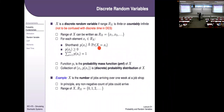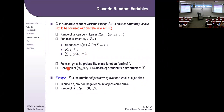For discrete random variables, we can write the range as a set and use the shorthand where little p of x is the probability that the random variable equals that outcome x. The properties carry over: p(x) ≥ 0 and the sum of all p(x) equals one. We call this the probability mass function or PMF. The collection of outcomes and probability mass functions together form the probability distribution of X.